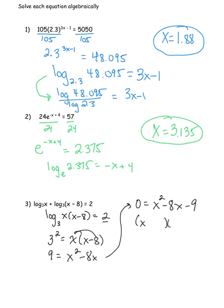My choices are to factor or use the quadratic formula — this one factors easily. So (x − 9)(x + 1) = 0, giving x = 9 or x = −1. But we have to be careful with logarithms: we cannot take the log of a negative number. Checking x = 9: both x and (x − 8) are positive, so that's fine. Checking x = −1: that gives the log of a negative — we reject it as an extraneous solution. x = 9 is the only solution.